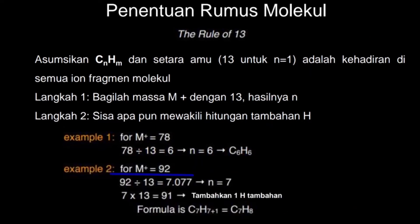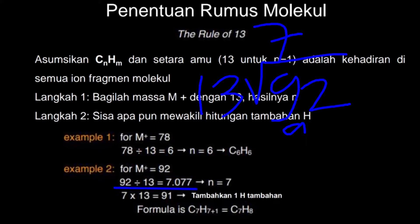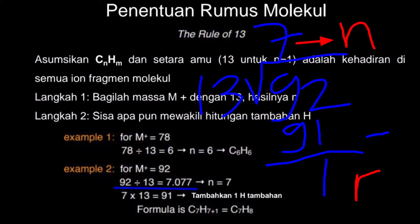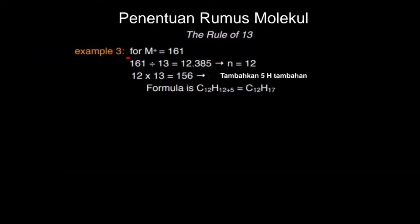Contoh kedua, molekul induknya massa molekulnya 92. 92 dibagi 13 sama dengan 7, berarti N-nya sama dengan 7. Sisa hasil bagi dengan 7 kali 13 adalah 1, berarti R-nya sama dengan 1. Berarti H-nya 7 ditambah 1, jadinya rumus molekulnya adalah C7H8.